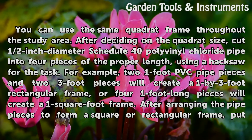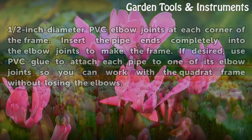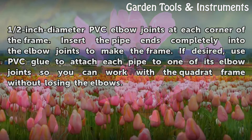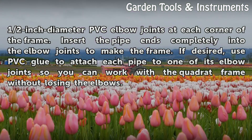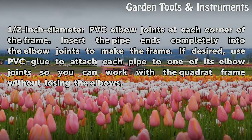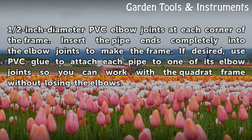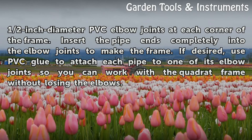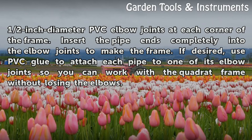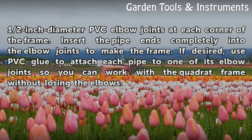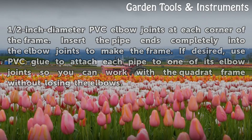After arranging the pipe pieces to form a square or rectangular frame, put ½ inch diameter PVC elbow joints at each corner of the frame. Insert the pipe ends completely into the elbow joints to make the frame. If desired, use PVC glue to attach each pipe to one of its elbow joints so you can work with a quadrat frame without losing the elbows.